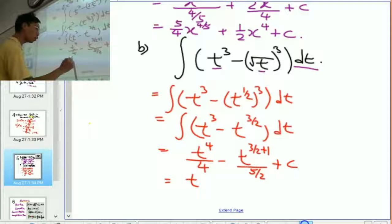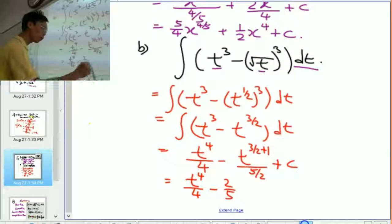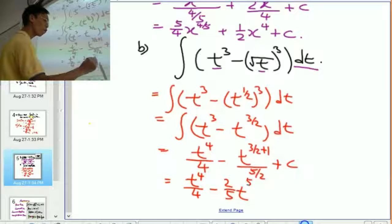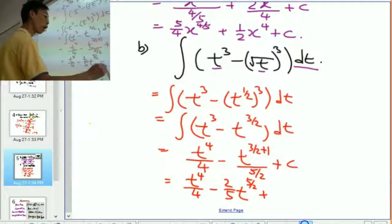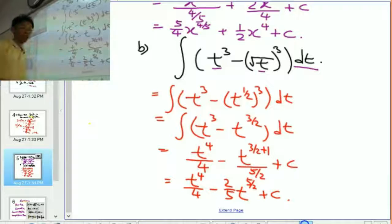So, the answer to this is t to the power of 4 over 4 minus 2 fifth t to the power of 5 over 2 plus c. Did you get that right? Yes. Excellent.